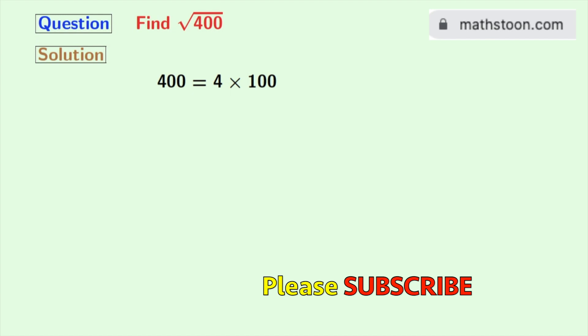Look that 400 can be written as 4 times 100. Here both 4 and 100 are perfect squares which are the squares of 2 and 10 respectively.